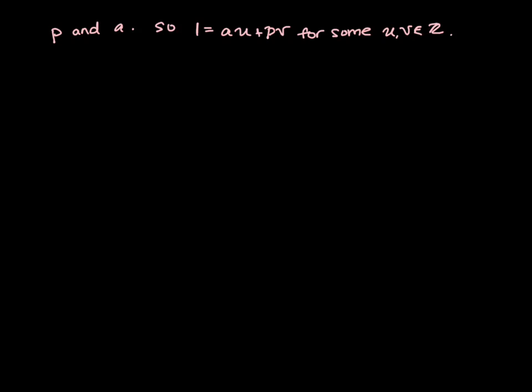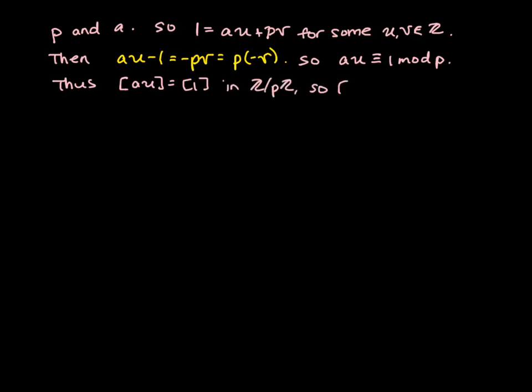Now what do we have? That implies that if we subtract 1 and bring the pv over, then au minus 1 equals negative pv equals p times negative v. So this tells us that au is congruent to 1 mod p. Thus we have that the congruence class of au is equal to the congruence class of 1 mod p. So we can say that a times u equals 1.